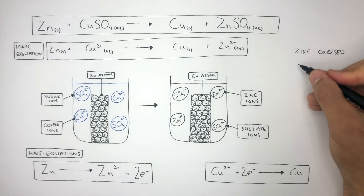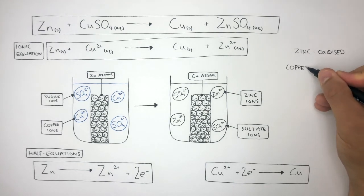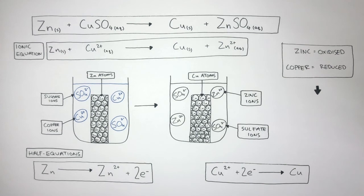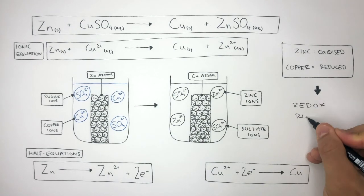The half equation for copper shows how the copper cation has been reduced: Cu²⁺ + 2e⁻ → Cu, representing how the copper ion with a charge of 2+ has gained two electrons to become a copper atom. Reduction is the gain of electrons. So because oxidation and reduction have taken place in the same chemical reaction, this is a redox reaction.